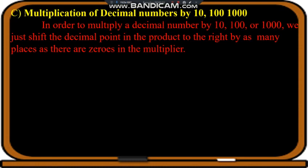If we have ten, we will place the decimal one place to the right. If we have hundred, then two places to the right. And if we have thousand, then three places to the right.